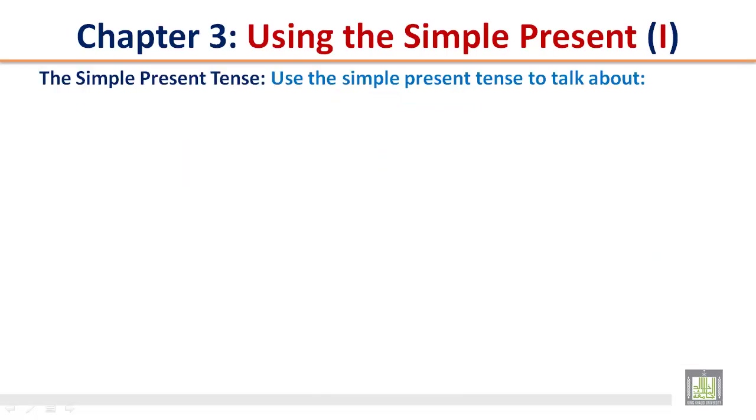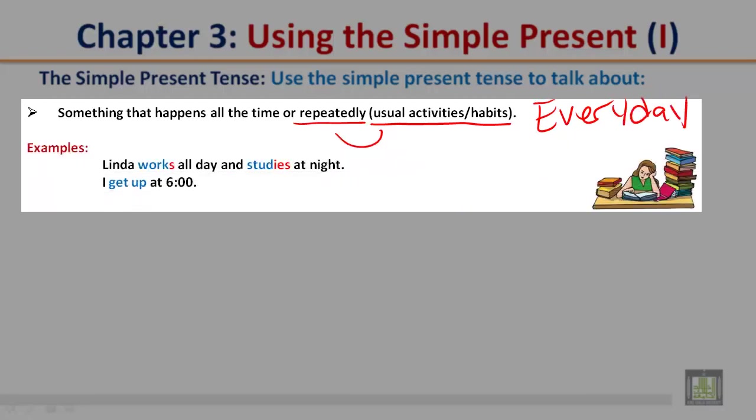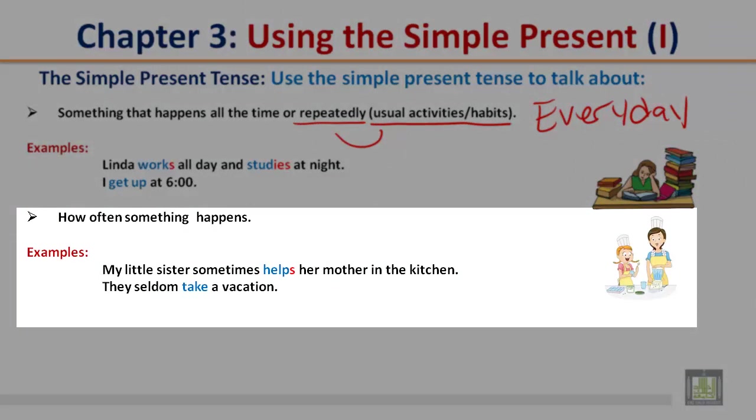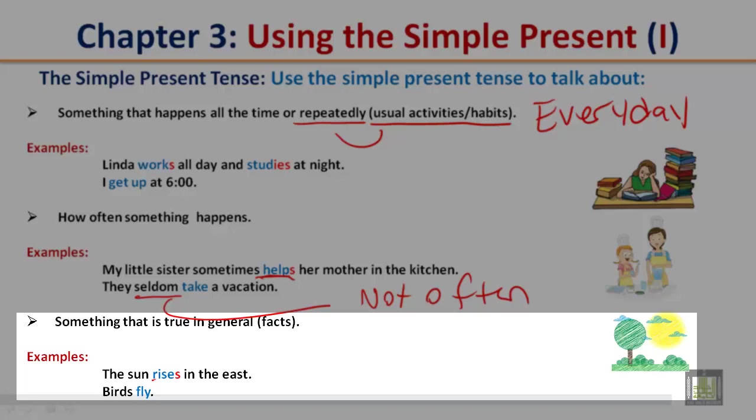The simple present tense: use the simple present tense to talk about something that happens all the time or repeatedly. Repeatedly meaning usual activities or habits, something that you do almost every day. Examples: Linda works all day and studies at night. I get up at 6 o'clock. How often something happens. Here's an example: my little sister sometimes helps her mother in the kitchen. They seldom take a vacation. Seldom is not often. Something that is true in general, facts. The sun rises in the east. Birds fly. These are facts.